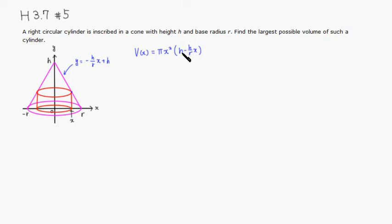Since h is in common, I'll pull it out, so you have pi h, then you have x squared, and then you have 1 minus x over r. Alright, so this is the volume function, and x can go from 0 to r. So we can go from 0 to r.